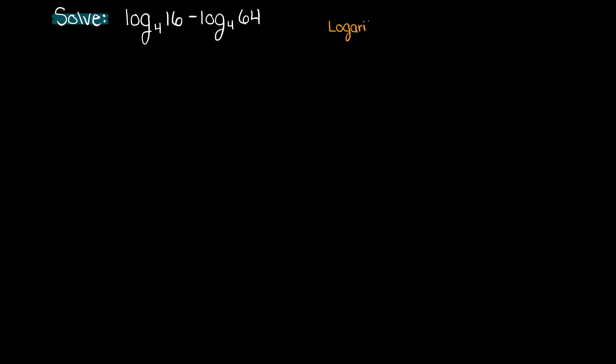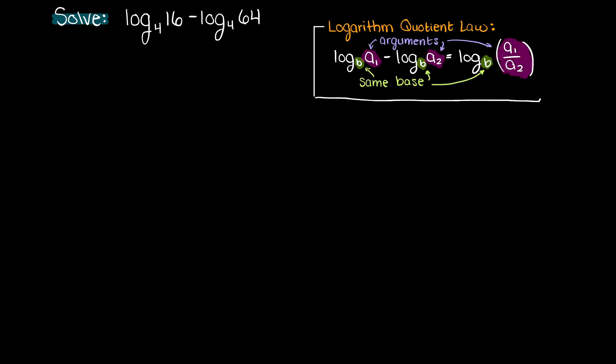To begin solving this problem, let's look at the logarithm quotient law, which I have written here. We see that when subtracting logarithms of a common base, in this case 4, our new argument becomes the first argument divided by the second argument.